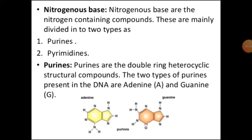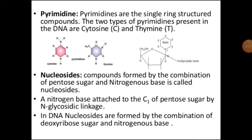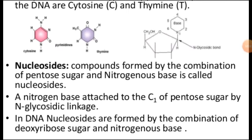The nitrogenous bases linked with DNA are compounds containing nitrogen and are divided into two parts: purines and pyrimidines. Purines are double-ring heterocyclic structure compounds — adenine and guanine. Pyrimidines are single-ring structure compounds; the two types in DNA are cytosine and thymine. A nucleoside is a compound formed by the combination of a pentose sugar and a nitrogenous base, attached at the C1' of the pentose sugar via a N-glycosidic linkage.